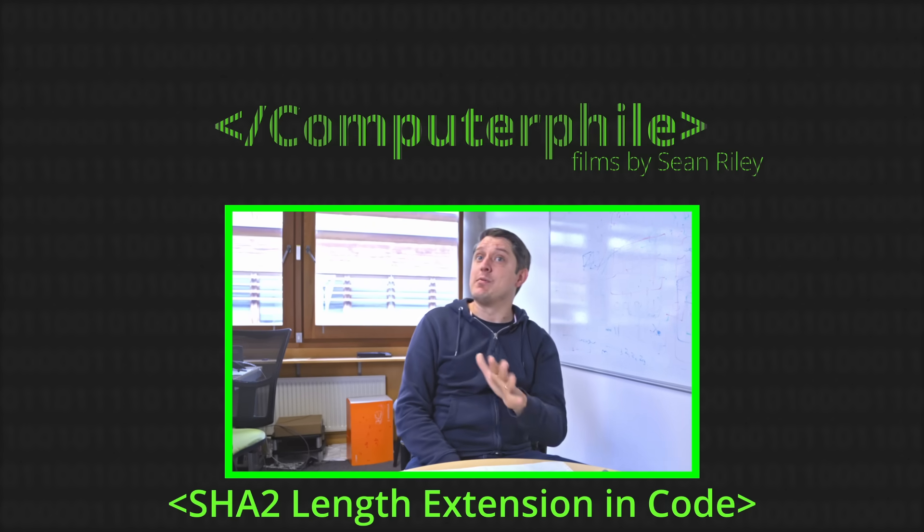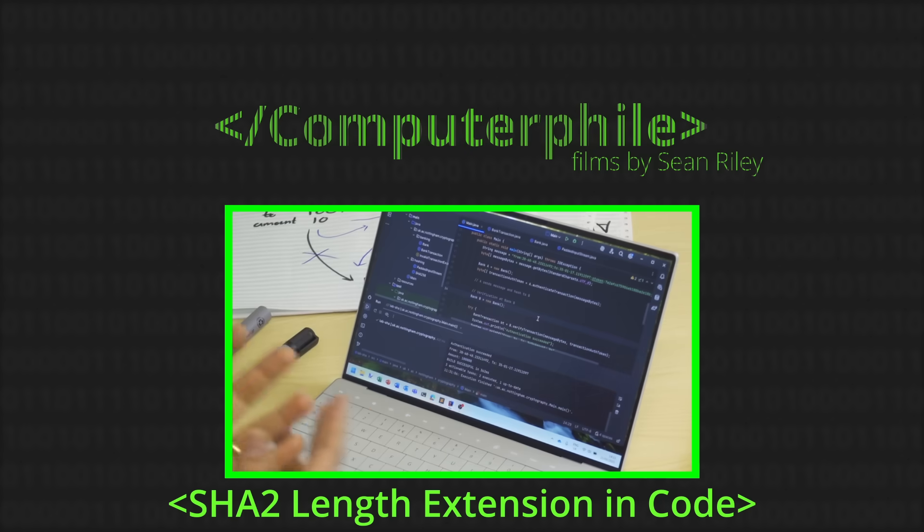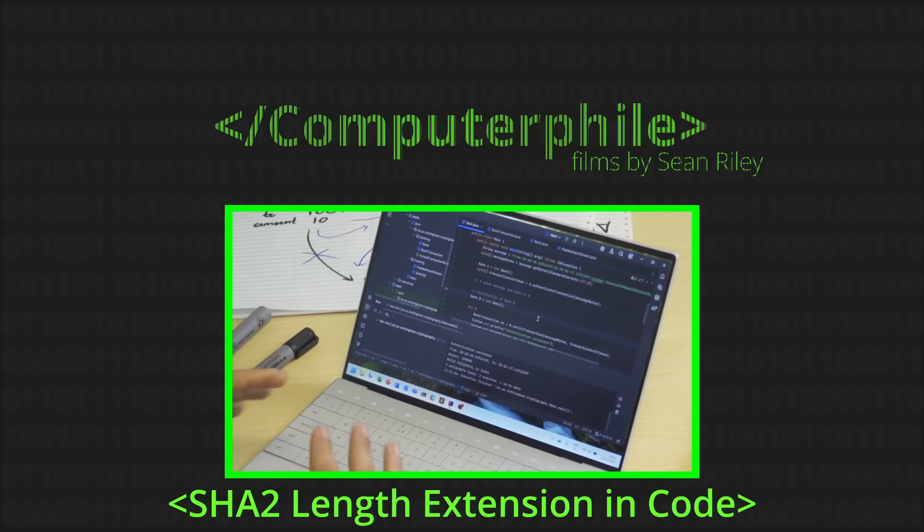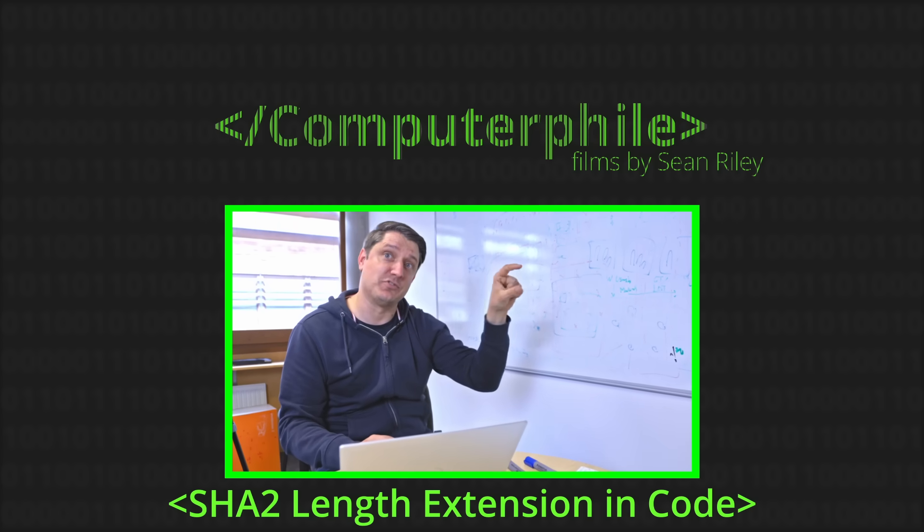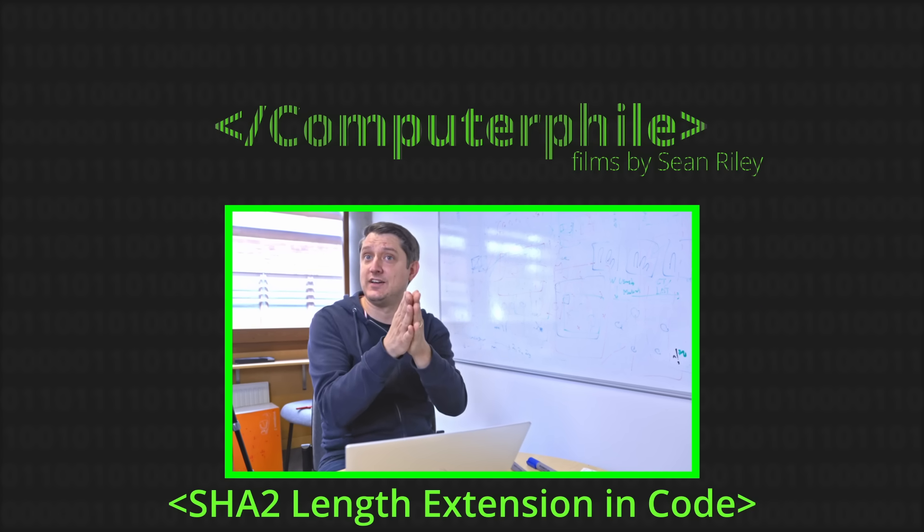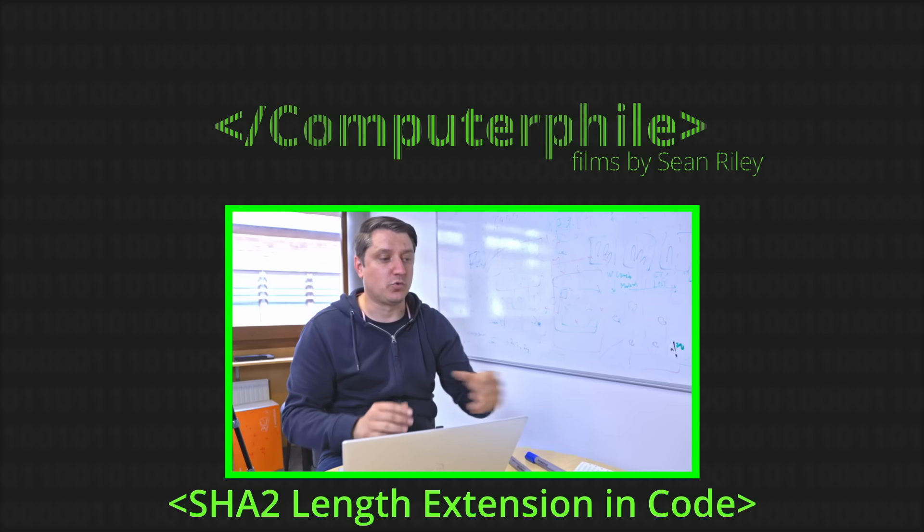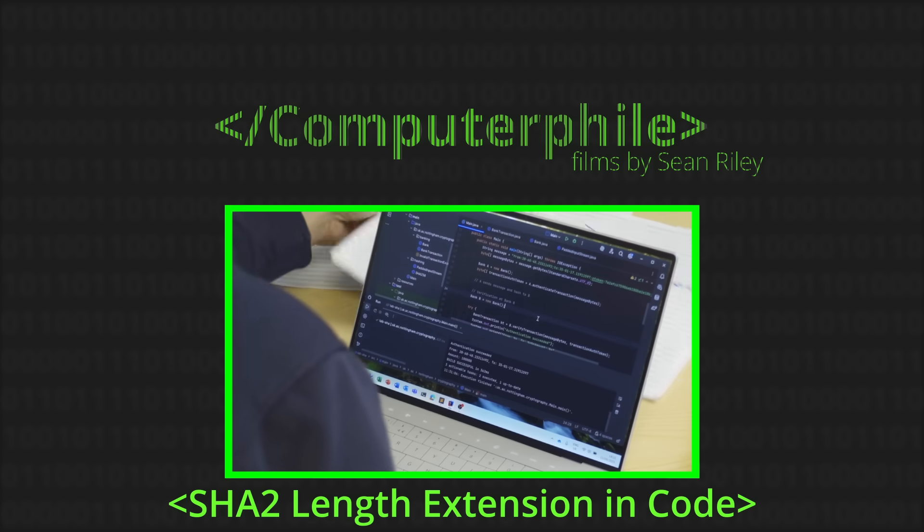So I thought we'd cover that today and I've actually implemented one up so we can have a look at it. So I've taken a working copy of SHA-256 and I've edited it so that rather than just hashing from the start, I can also resume hashing at a certain point. So what I'm essentially doing, if we look at my picture...